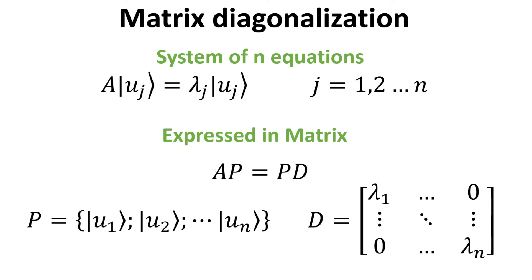Hence, for an n by n operator, the eigenvector equation is a linear system of n equations as shown, with each equation having its set of eigenvector U_j and eigenvalue lambda_j.